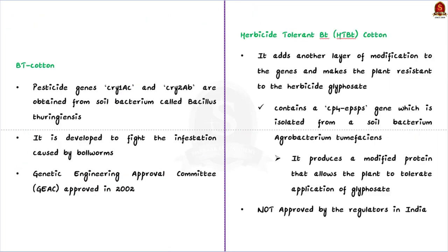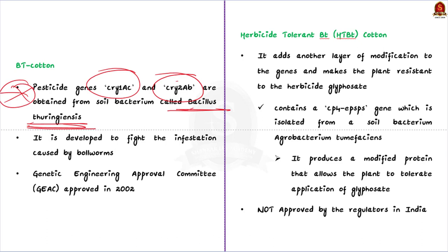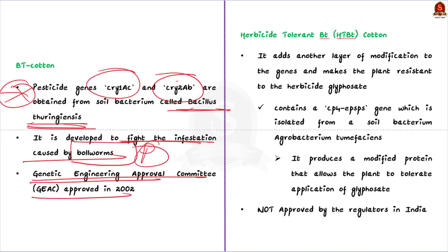In BT cotton, pesticide-resistant genes cry1Ac and cry2Ab are obtained from a soil bacterium called Bacillus thuringiensis and inserted into the cotton DNA to make the plant resistant to pests. In this process, the cotton's genes are modified and called genetically modified cotton varieties or BT cotton. It was developed to fight infestation caused by bollworms. The Genetic Engineering Appraisal Committee (GEAC) approved the release of BT cotton for commercial cultivation in 2002 in western and southern parts of the country.